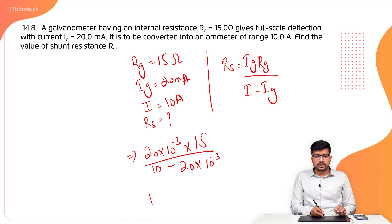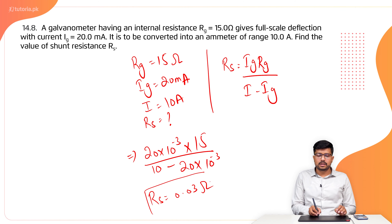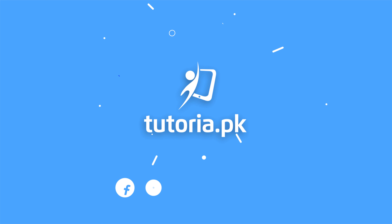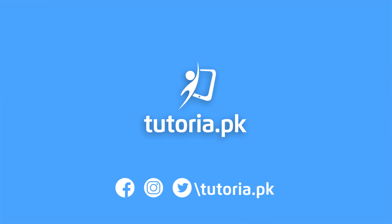The shunt resistance is 0.03 ohms. If you have a question in a paper with RG and IG given, you can easily find the shunt resistance by using this formula.